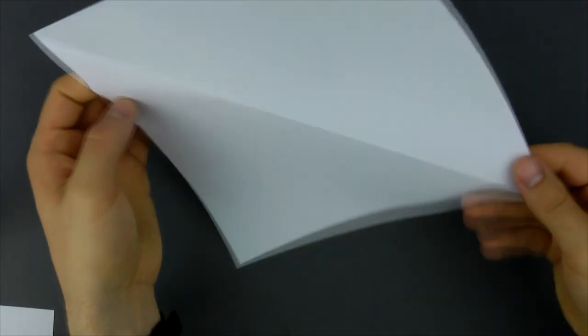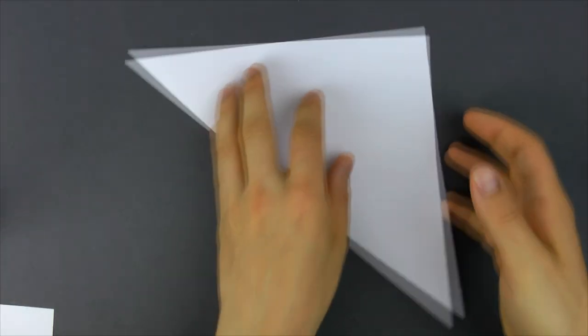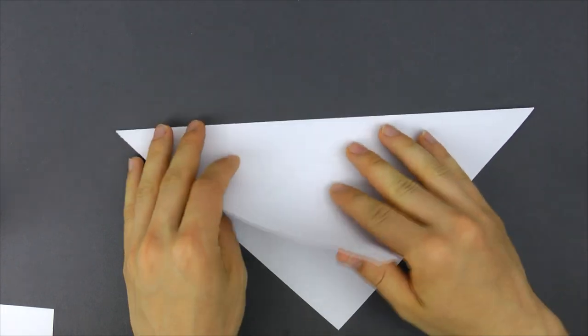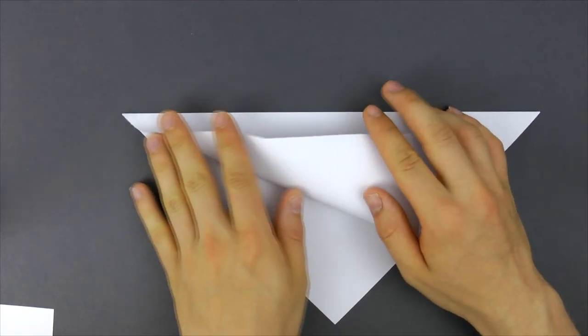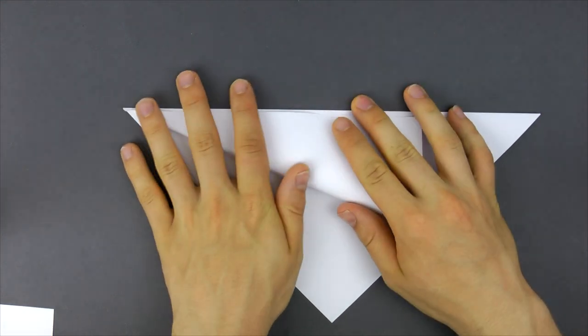If you began with a square, you of course skip this part. Now we're here with a triangle, and the next thing we do is fold the top layer so the long edges align.